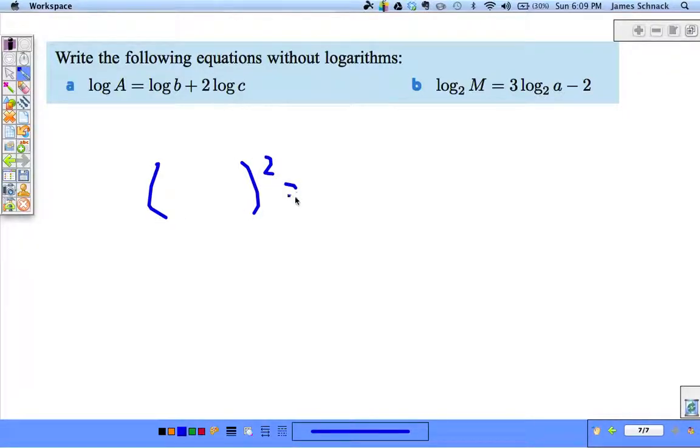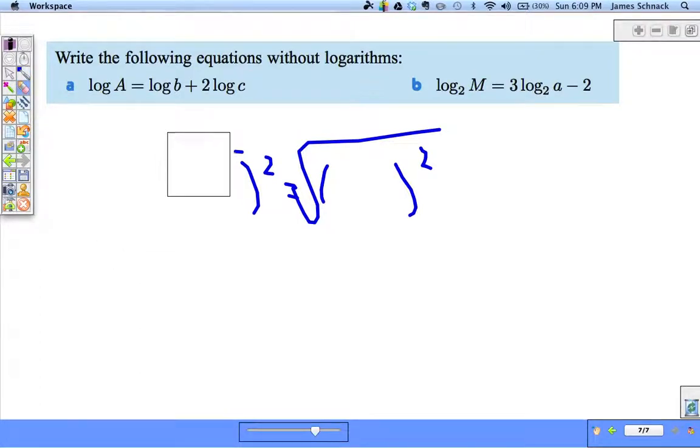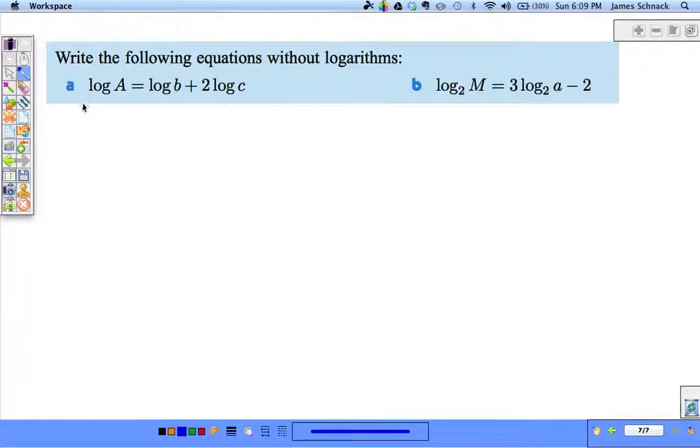What we want to do here is we want to turn this problem into log equals log. Just like if we have something squared equals something squared, that squared does go away because we can undo it on both sides. If we get log equals log, the logs will go away. Okay. And this is sort of why we spent so much time practicing log rules.